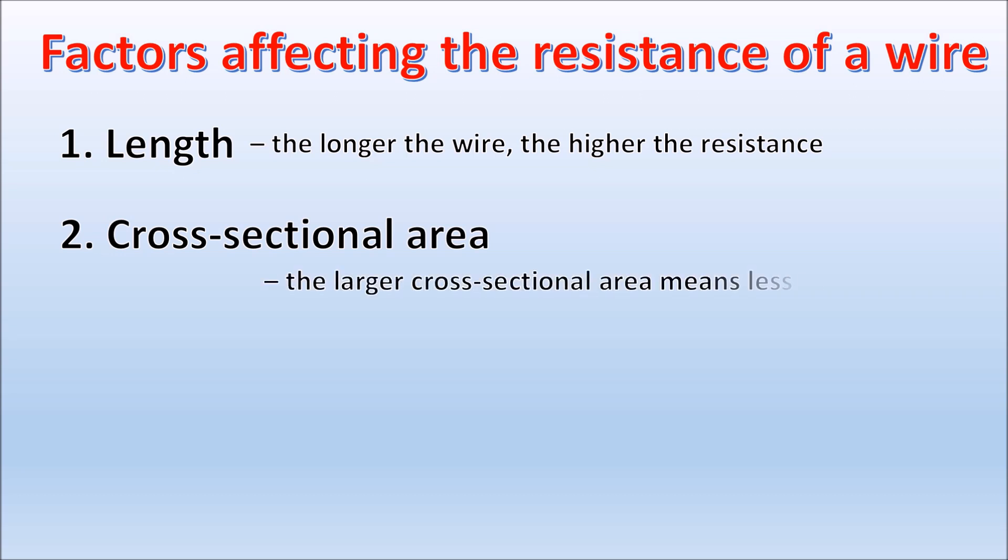Number two is the cross-sectional area. Large cross-sectional area means less resistance.